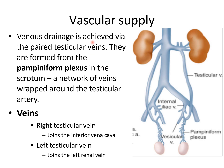The venous drainage is achieved via paired testicular veins, formed from the pampiniform plexus in the scrotum. The pampiniform plexus is a network of veins wrapped around the testicular artery. You can see the right and left pampiniform plexuses — the right one is wrapped around the right testicular artery and the left one around the left testicular artery. The right testicular vein joins the inferior vena cava, and the left one joins the left adrenal vein.